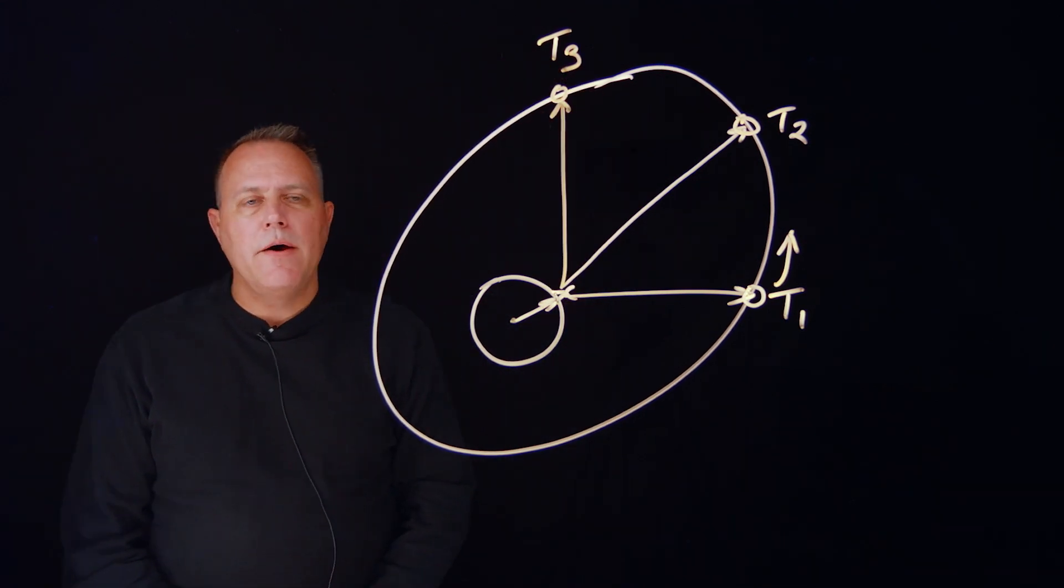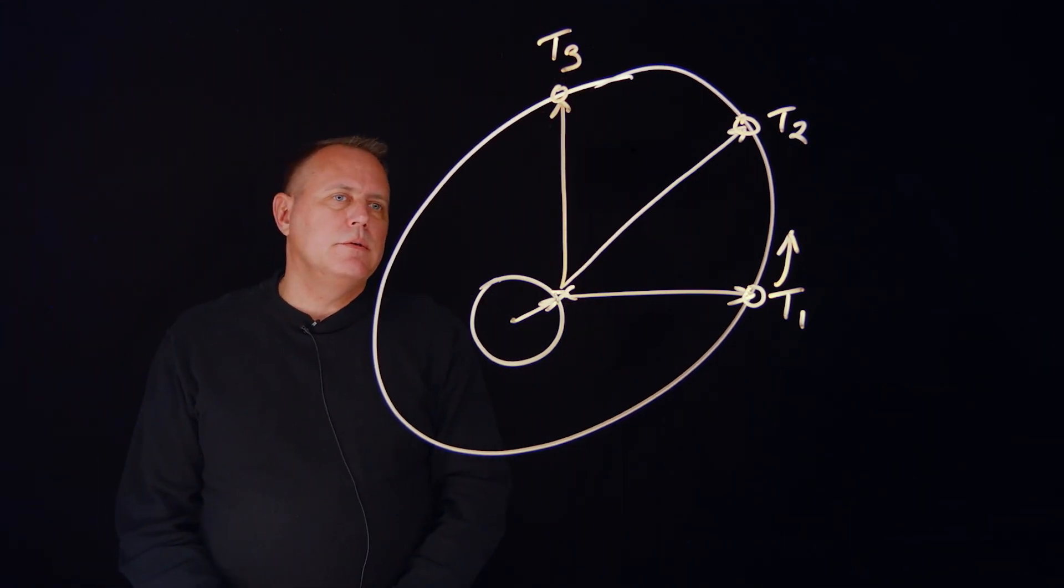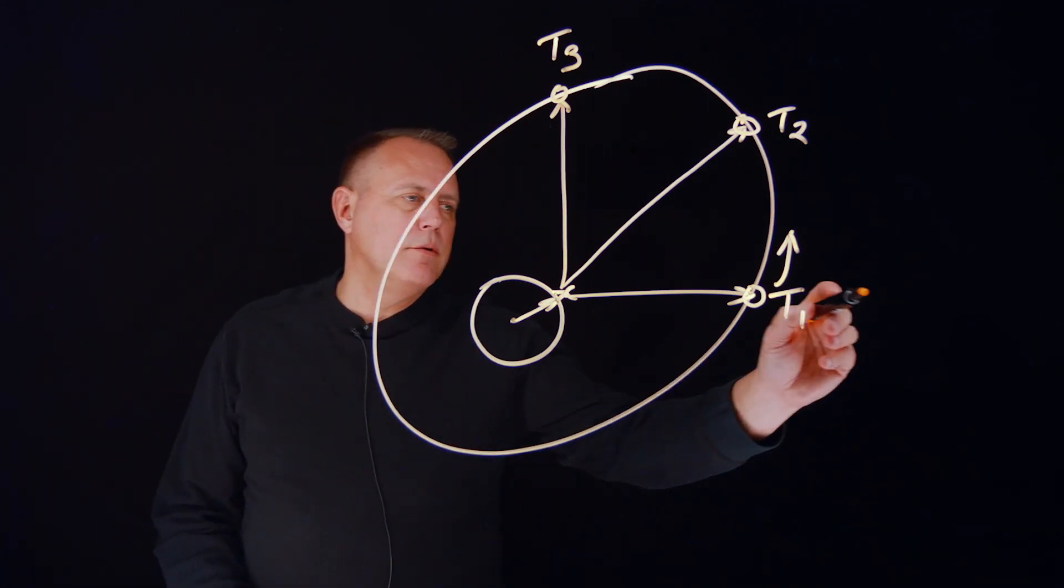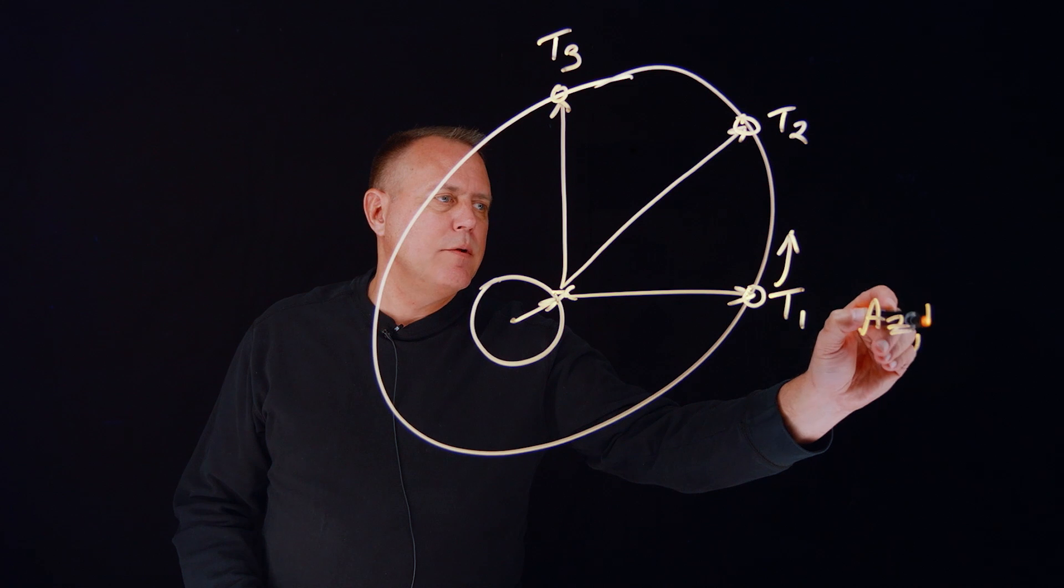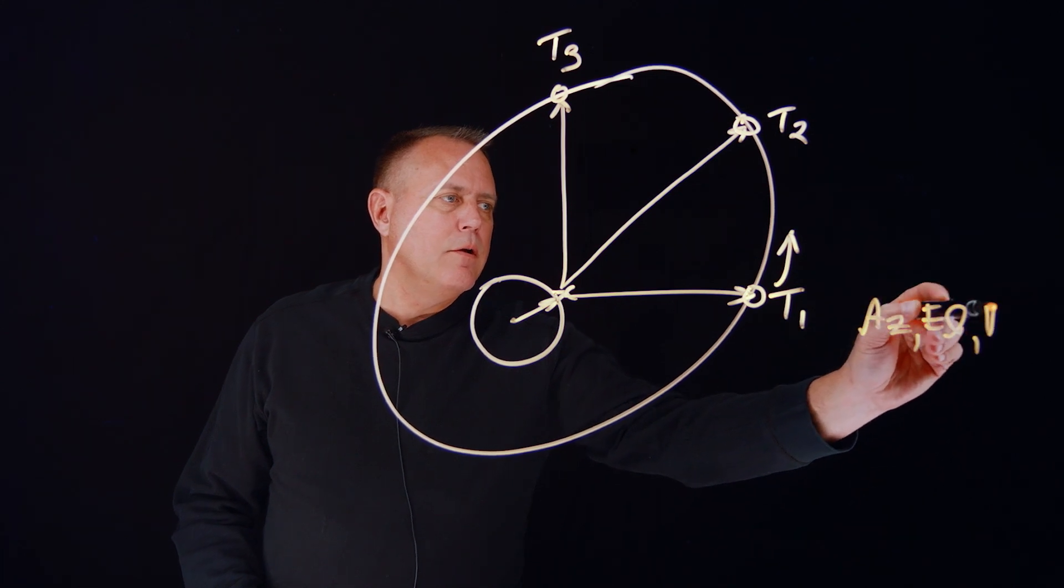So now I have essentially three measurements, which each measurement, or three sets of measurements, so let's say each set of measurements was azimuth, elevation, and range.